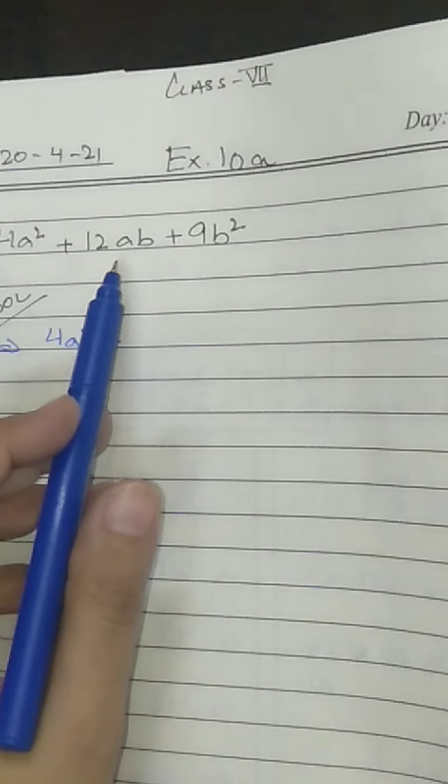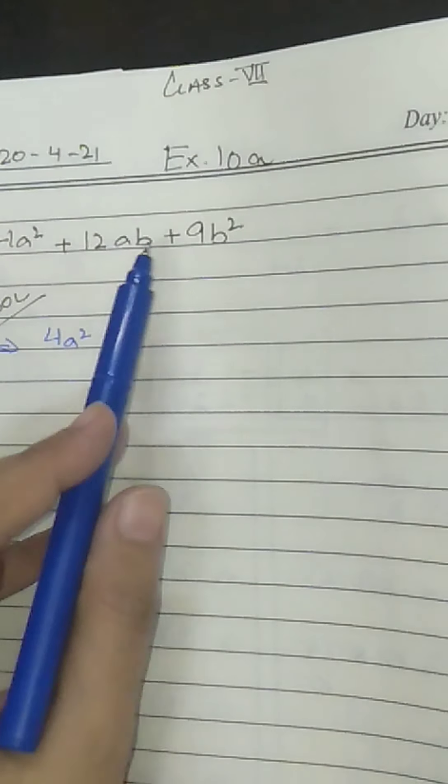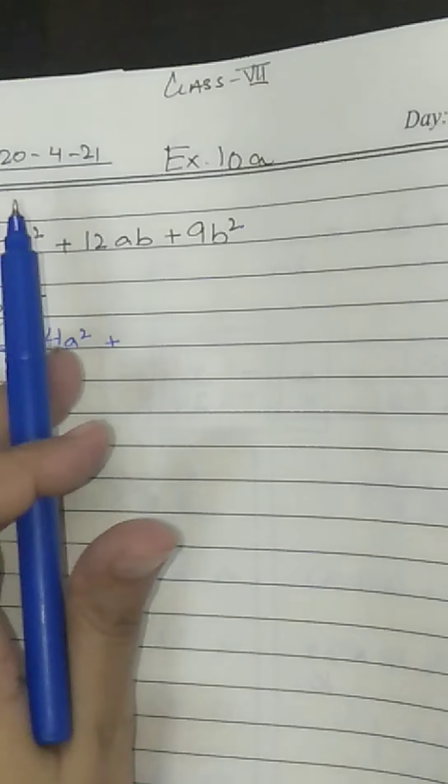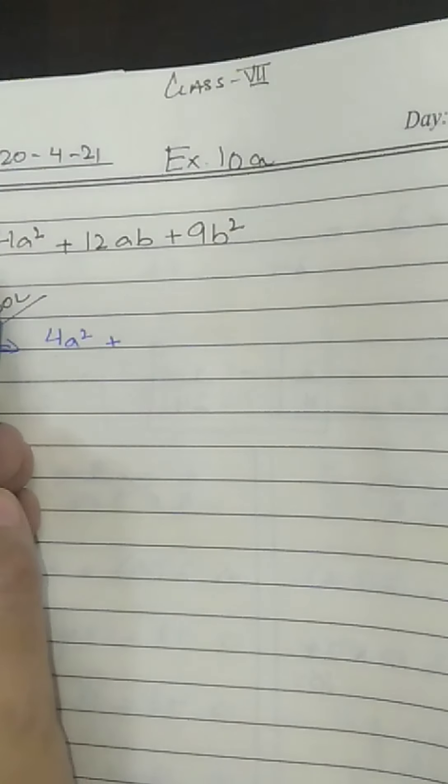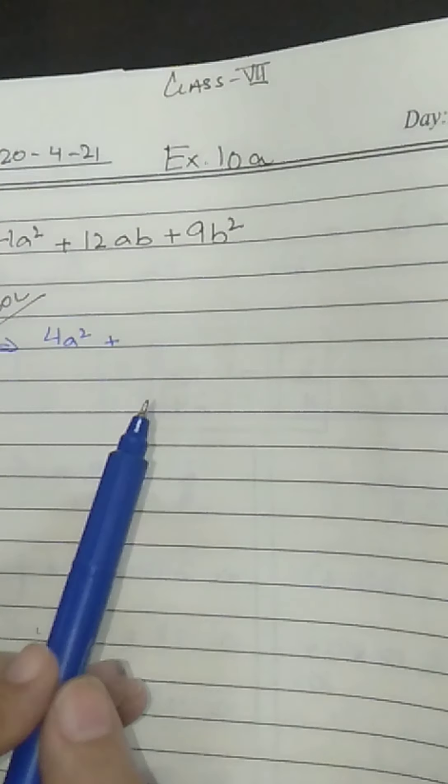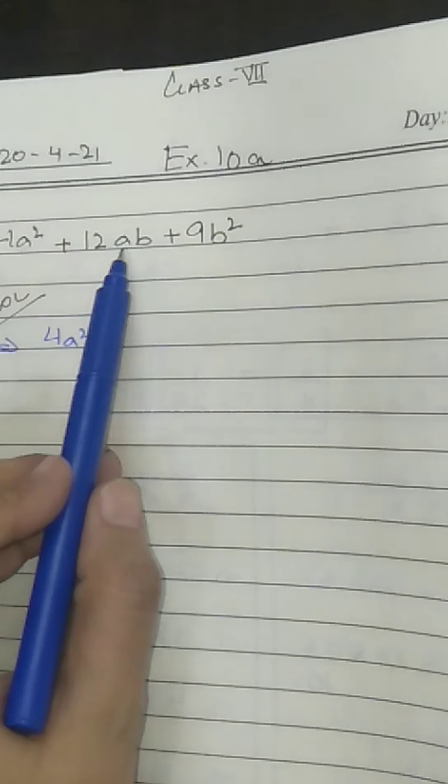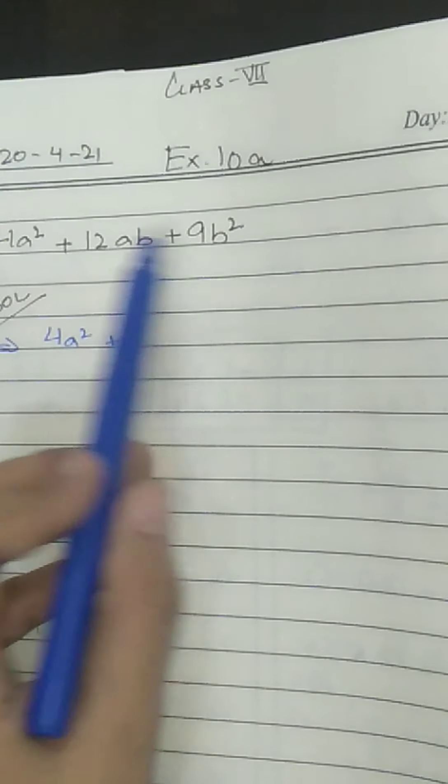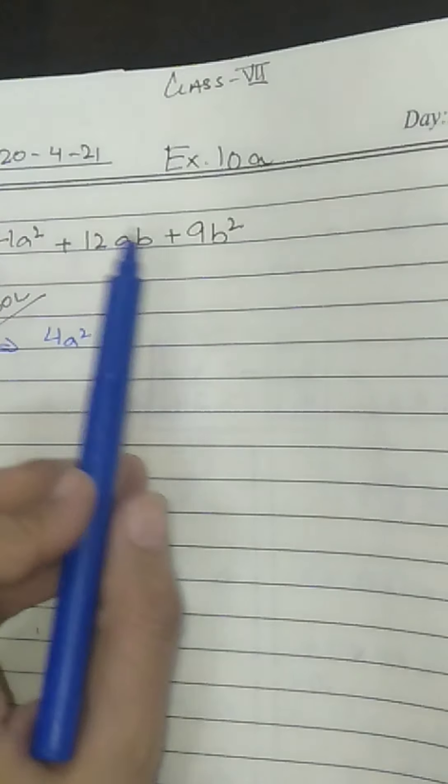We will first break the middle term. Why? Because when we make factors, it's compulsory that we take common from two values or three values. If we take common, all should have common. But let's see, we have A over here but here A is not there, so we can't take the common of A. We can't take the value of B as well.